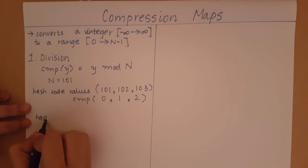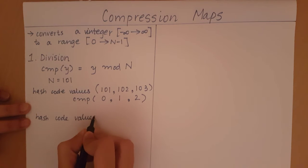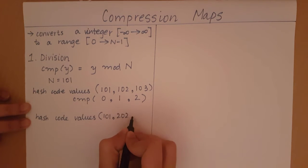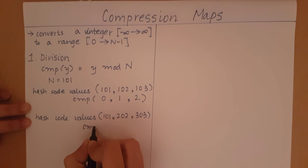Let's say the hash code values we receive are 101, 202, 303. In such a case, the compression map of this is going to be 0, 0, 0. 101 will map to 0, so will 202 and 303. So in this case collision occurs.